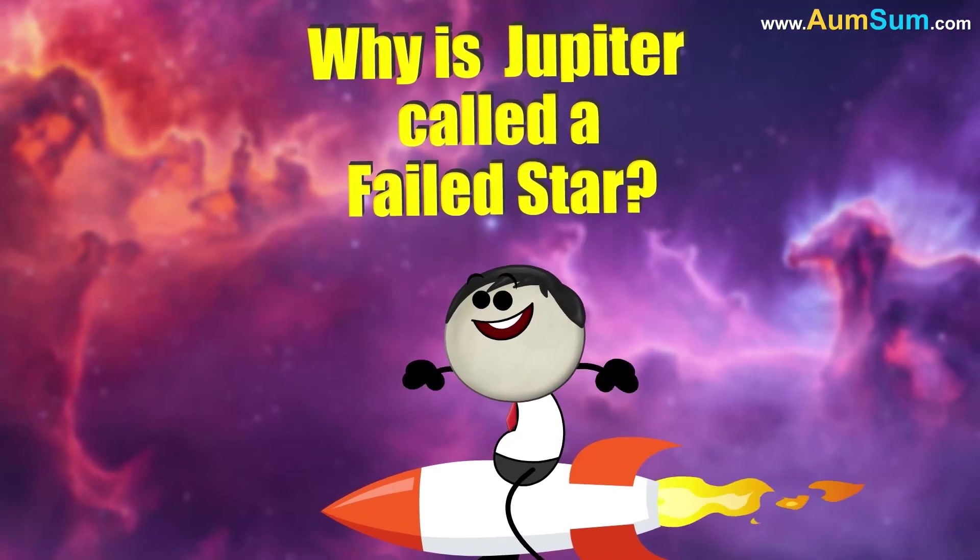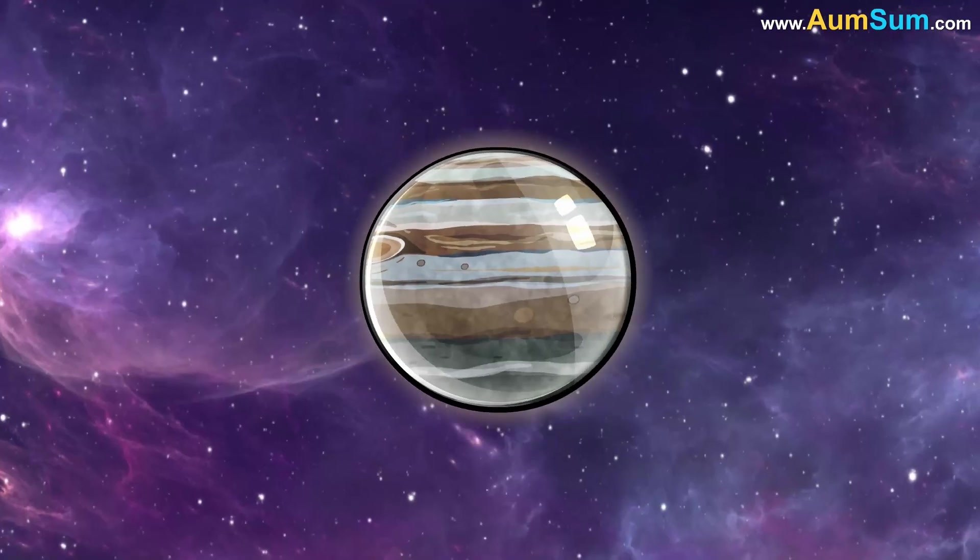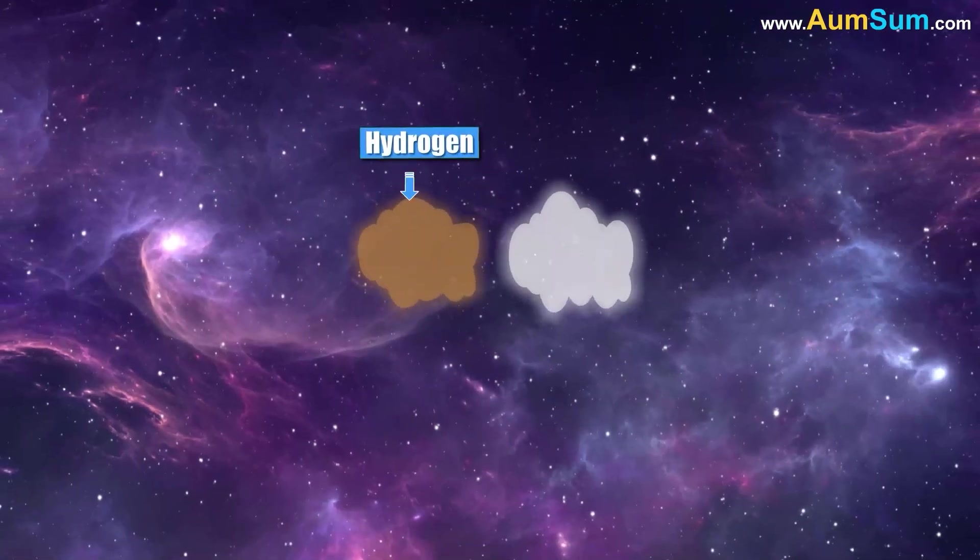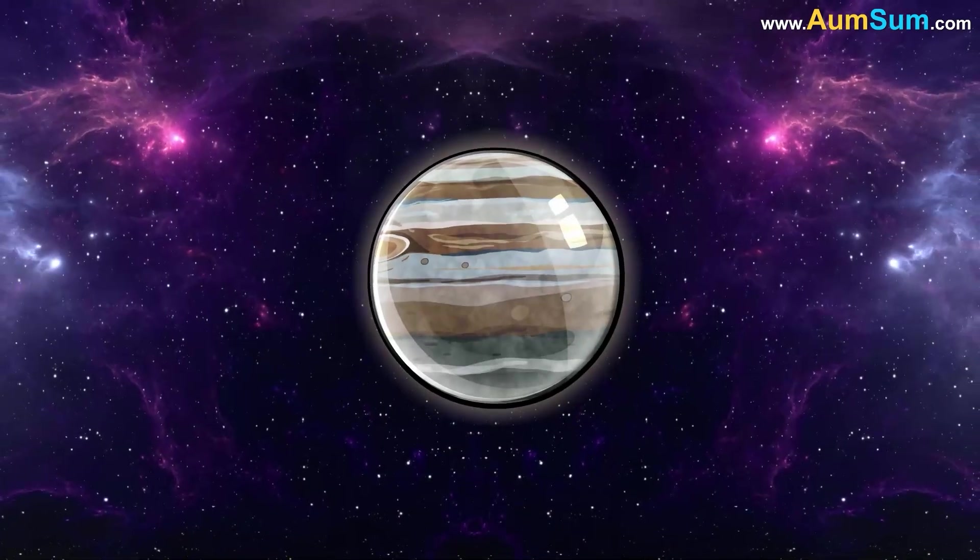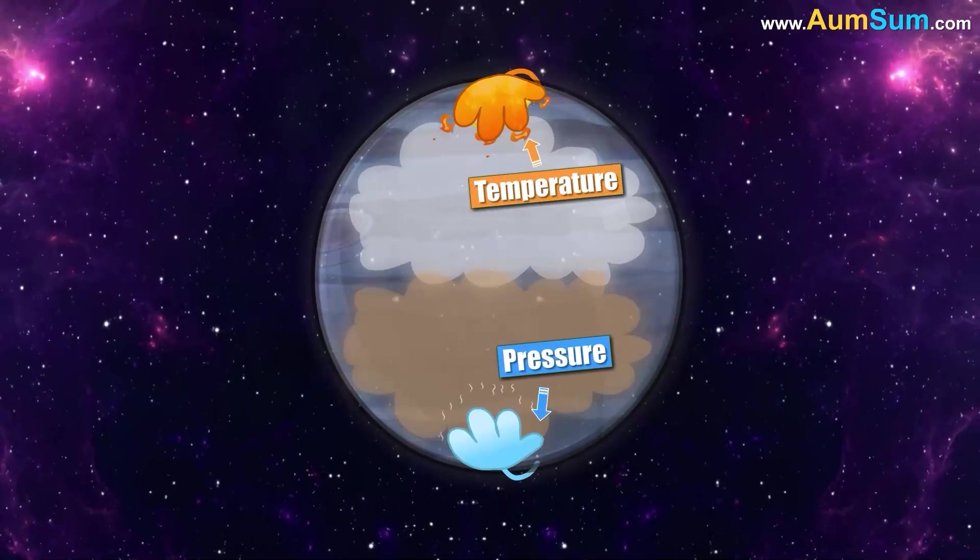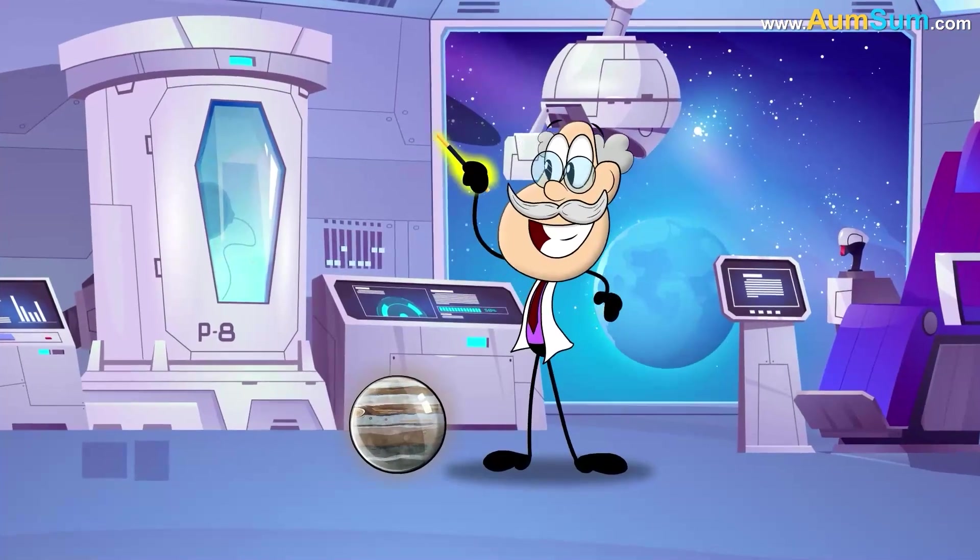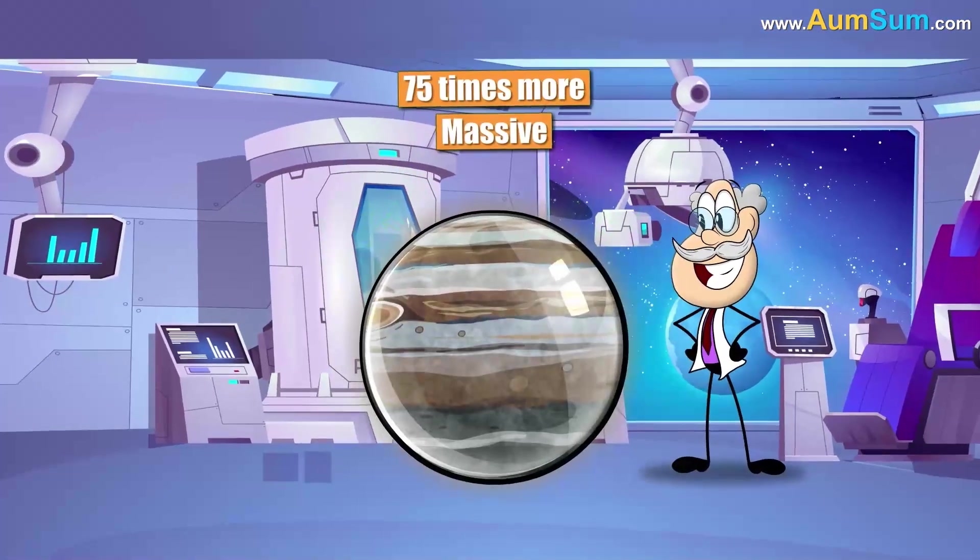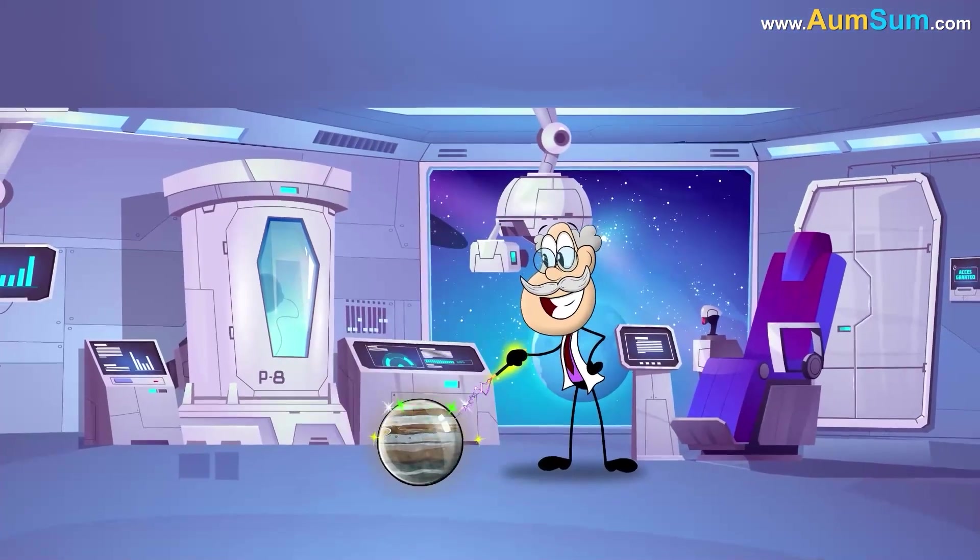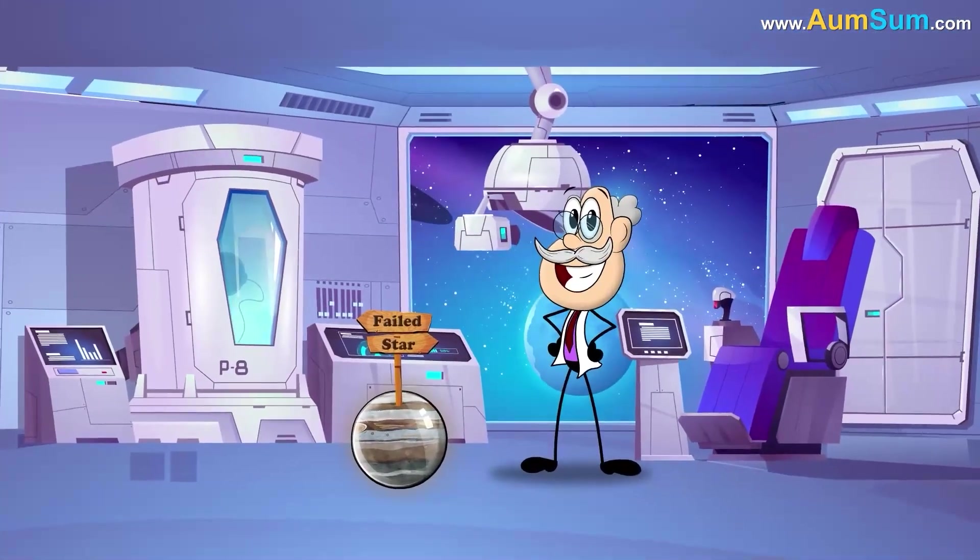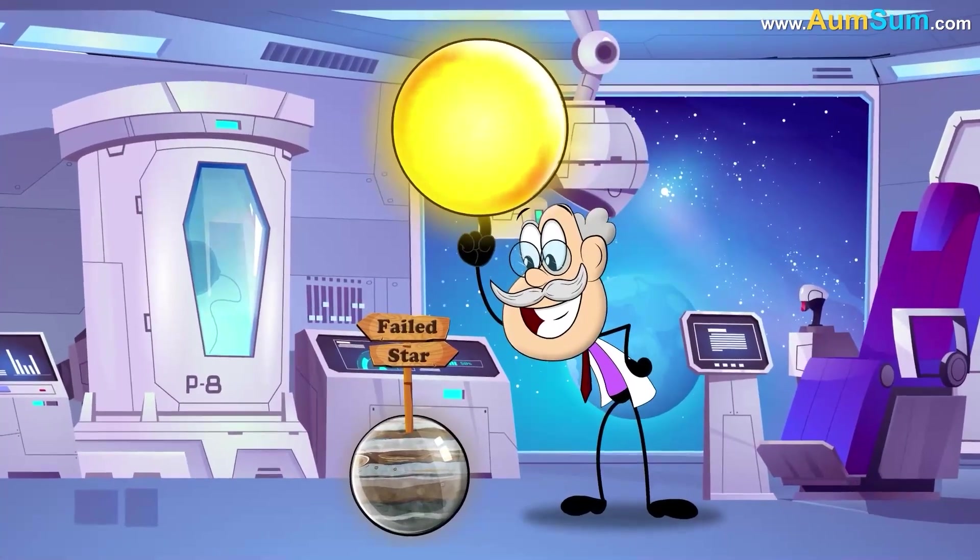Why is Jupiter called a failed star? To start with, Jupiter is made up of hydrogen and helium, the same elements as our Sun. But it is not massive enough to create the internal pressure and temperature needed to fuse hydrogen into helium. Basically, Jupiter would need to be about 75 times more massive to ignite nuclear fusion in its core. Hence, Jupiter is called a failed star because it has the same ingredients as a star but didn't grow massive enough to ignite.